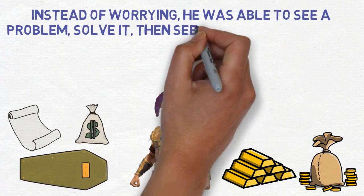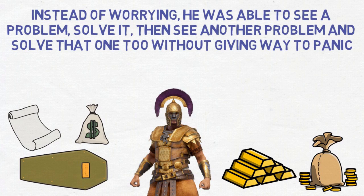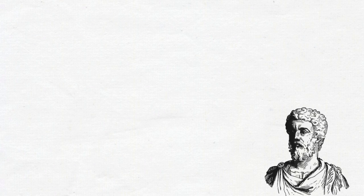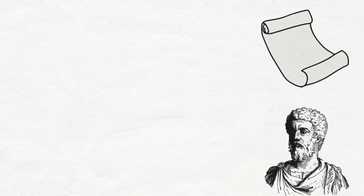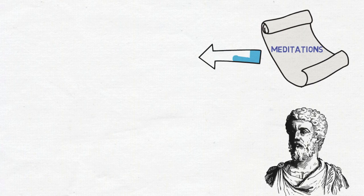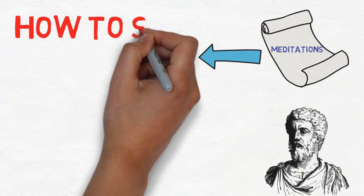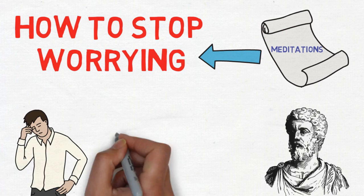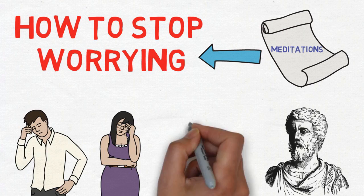Instead of worrying, he was able to see a problem, solve it, then see another problem and solve that one too without giving way to panic. During his rule, Aurelius found the time to construct a series of autobiographical writings now known as the Meditations. These meditations are regarded as some of the greatest works of philosophy, which is why in this video we will be using some of his wisdom as motivation to help keep you from worrying and stressing too much about the ongoing pandemic, as well as all the other things that we tend to worry about in our everyday modern lives.